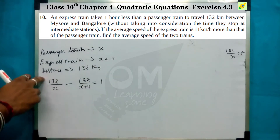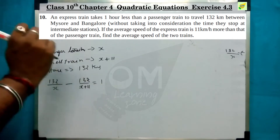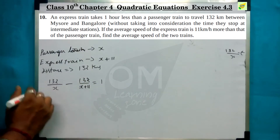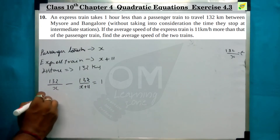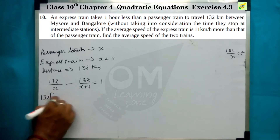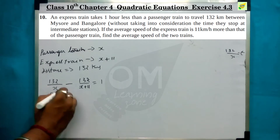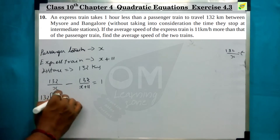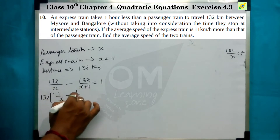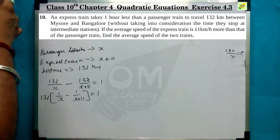So distance divided by speed is equal to time. We put 132 here and 132 here, giving us: 1/x minus 1/(x+11) equals 1.